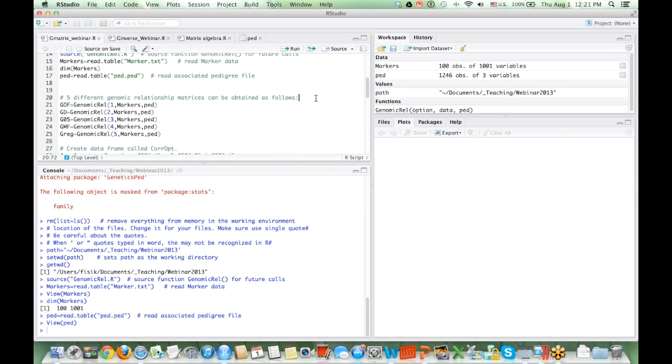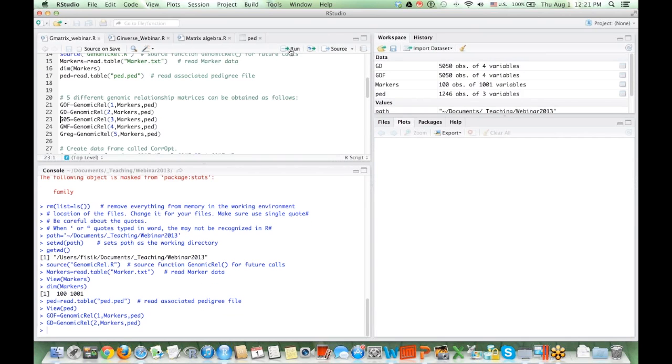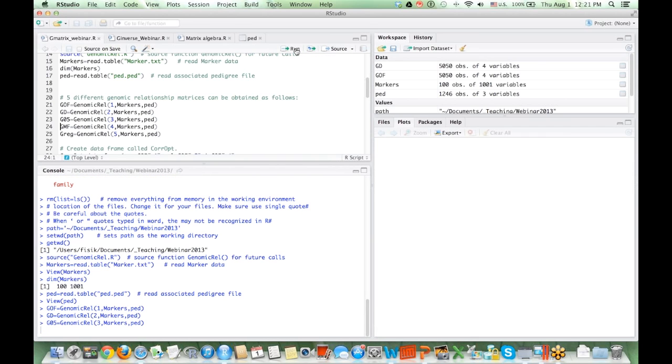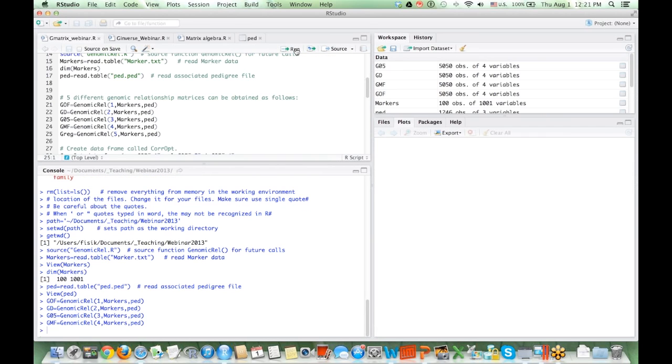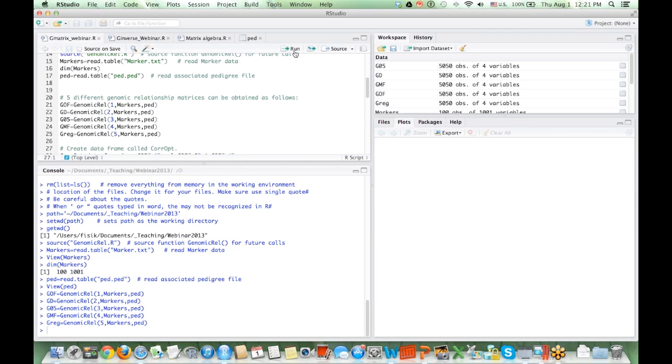Now, those are the five different methods we covered in the theory to calculate genomic relationships. GOF, GD, G05, GMF, and then GREG method. I did not include normalized method. But I think that's enough to show how we calculate genomic relationships. So I'm going through with each method. As you can see on the right side in the workspace, you can see those data frames are generated, matrices are generated.